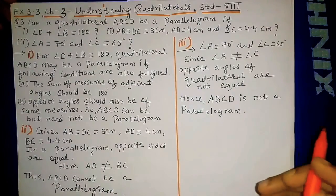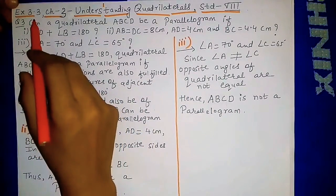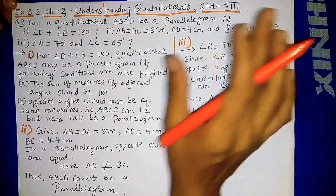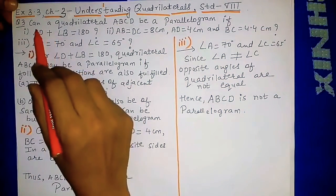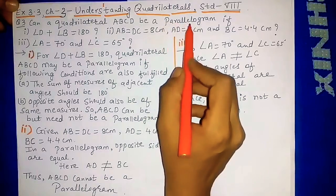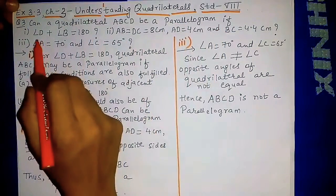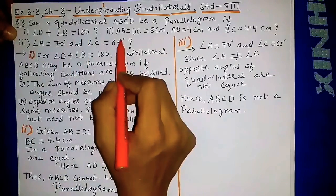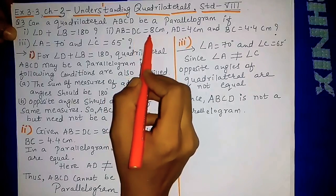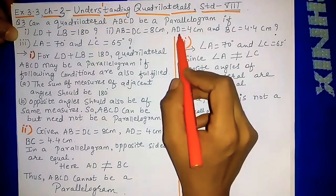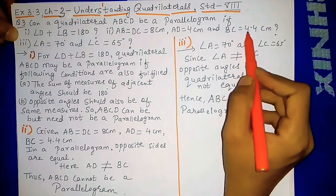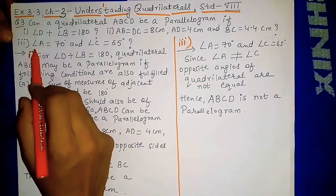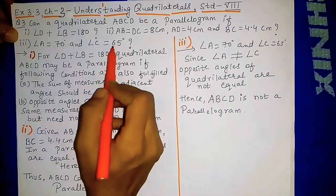We will see question number 3 of exercise 3.3, chapter 3 - Understanding Quadrilaterals of standard 8. The question asks: can a quadrilateral ABCD be a parallelogram under given conditions? Condition 1: angle D + angle B = 180°. Condition 2: AB = DC = 8 cm, AD = 4 cm, BC = 4.4 cm. Condition 3: angle A = 70° and angle C = 65°.